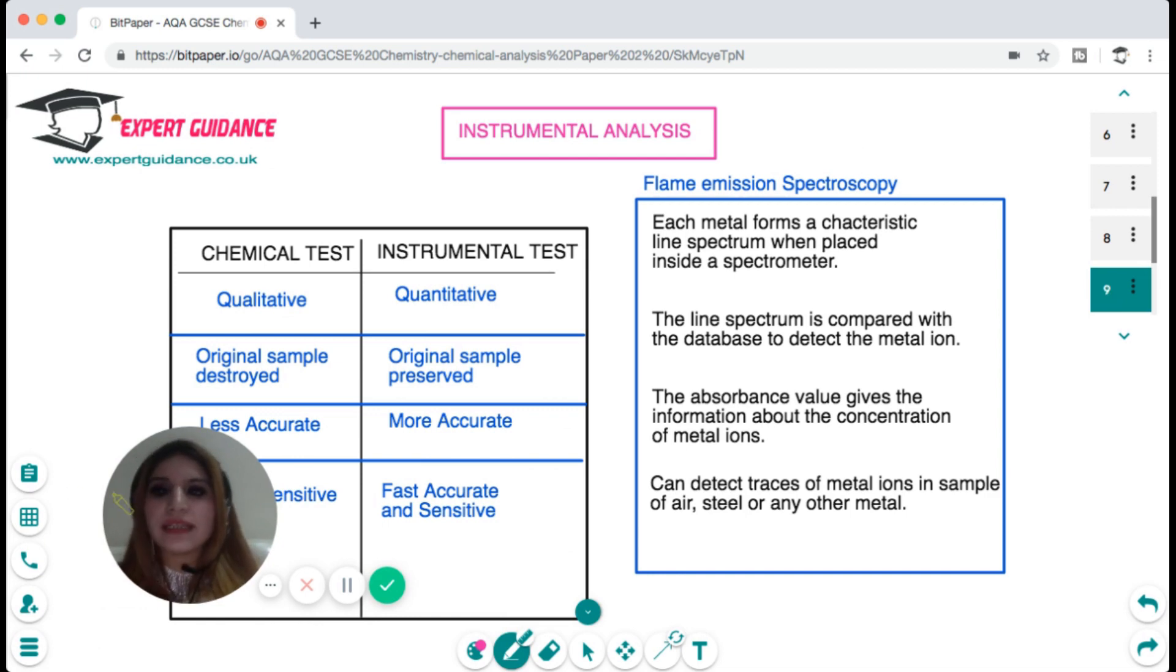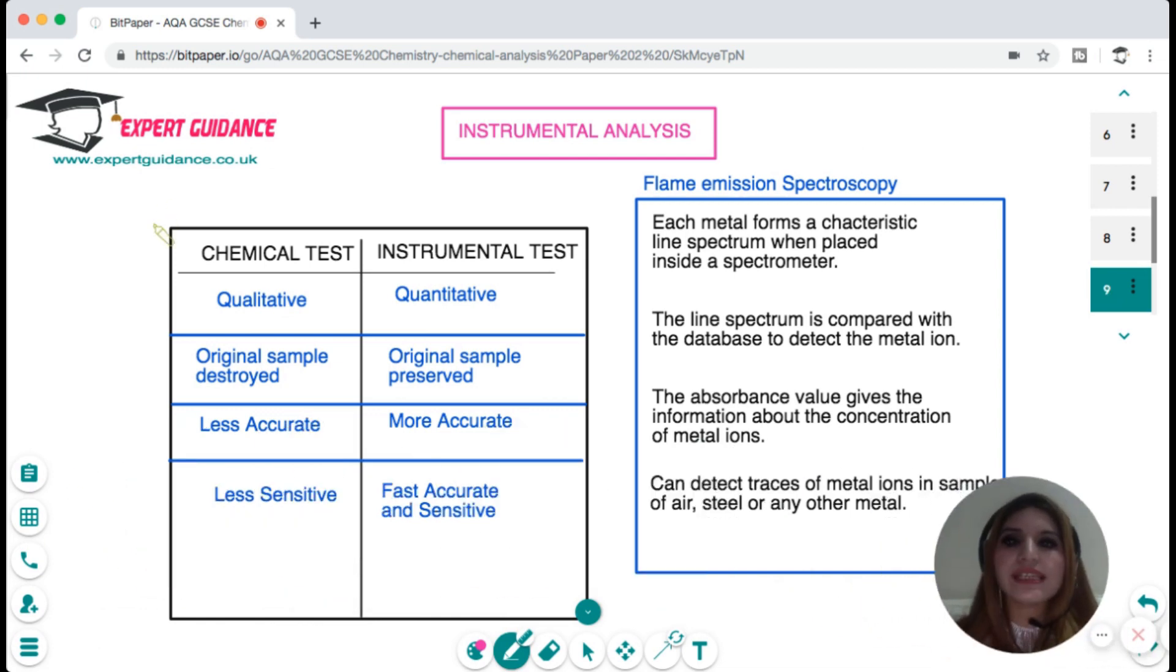Next is what is instrumental analysis? Whatever we did so far was chemical tests which were qualitative where we are destroying the original sample by mixing something to it, and they are less accurate and sensitive and do not give quantitative information. On the other hand there's instrumental analysis which is quantitative where the original sample is preserved, which is more accurate, fast, and sensitive.